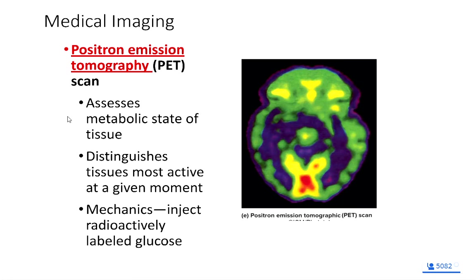We can also do a PET scan. The PET scan is a form of contrast imagery where we give the patient something radioactive — a radioactive sugar — and we can look at the metabolic state of tissues.